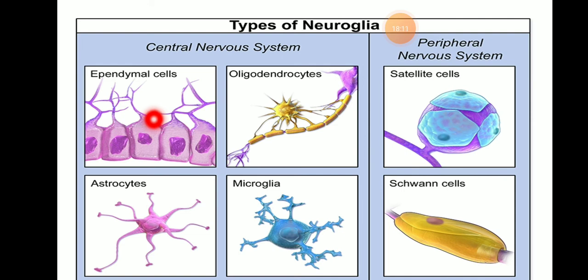Ependymal cells are single squamous or columnar, often ciliated epithelial cells lining the ventricles and central canal of the spinal cord. These ependymal cells form a specific structure in the central nervous system as part of the nervous tissue.